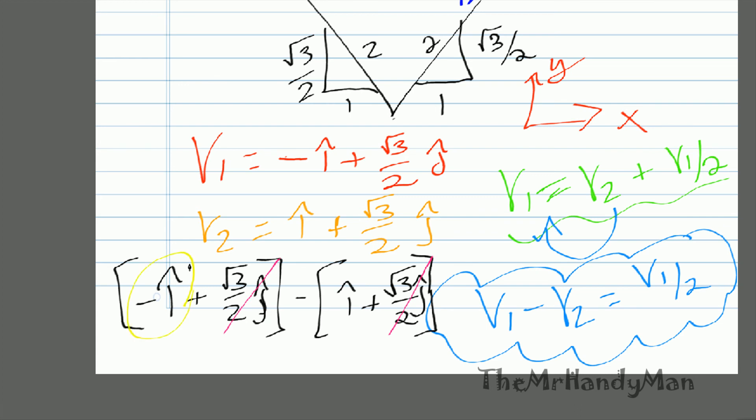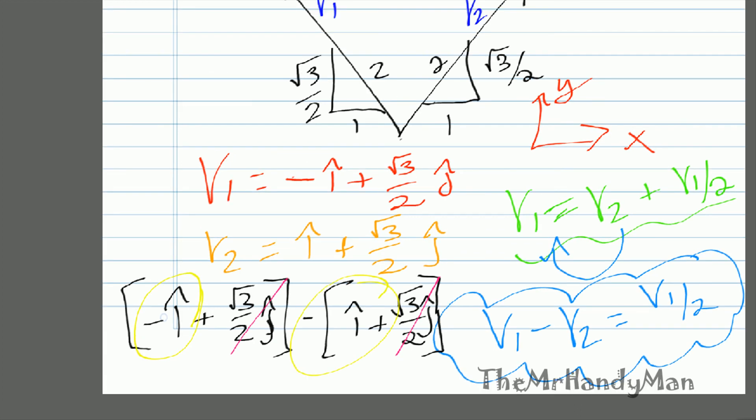negative 1, negative i, but what are we solving there? What we're saying is that v1 minus v2 is going to equal v1 relative to 2. So therefore, v1 relative to 2 is going to equal negative 2i.